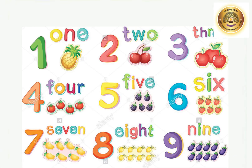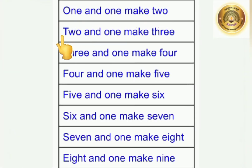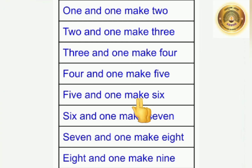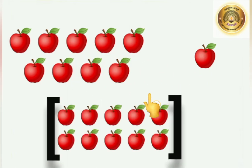Students, do you remember? In the previous class, we had seen numbers from 1 to 9 with the help of objects. Now let's see again: 1 and 1 make 2, 2 and 1 make 3, 3 and 1 make 4, 4 and 1 make 5, 5 and 1 make 6, 6 and 1 make 7, 7 and 1 make 8, 8 and 1 make 9. Now let's see how we can get 10. Here we can see 9 apples, so let's count: 1, 2, 3, 4, 5, 6, 7, 8, 9. And 9 and 1 make 10.